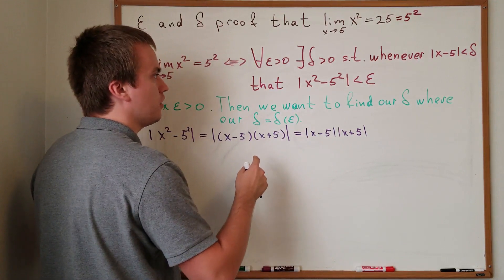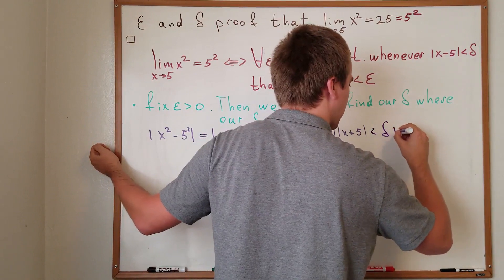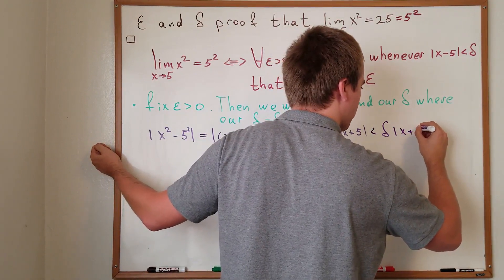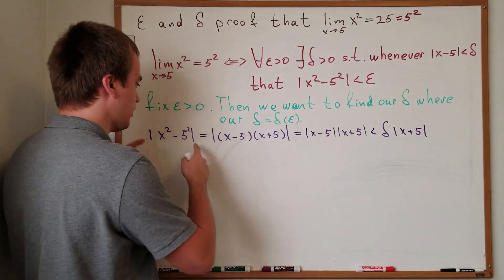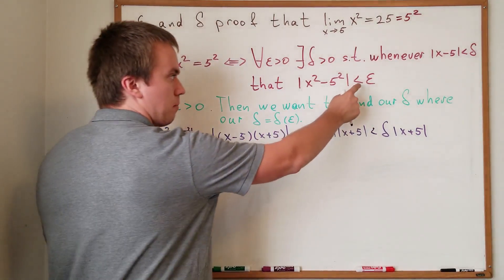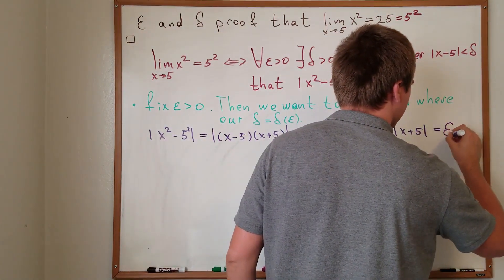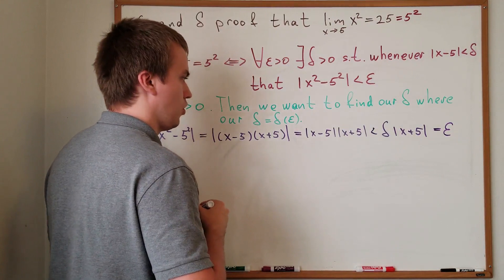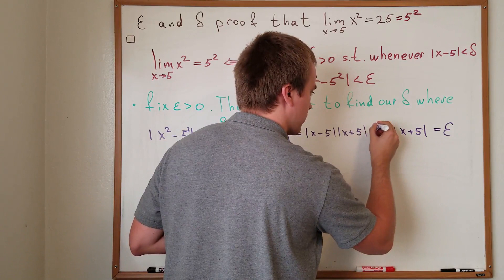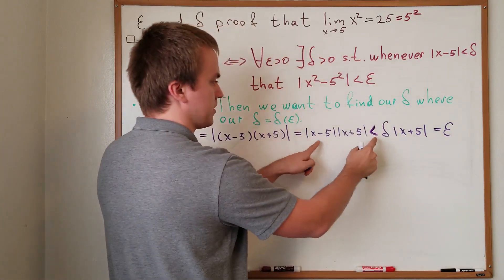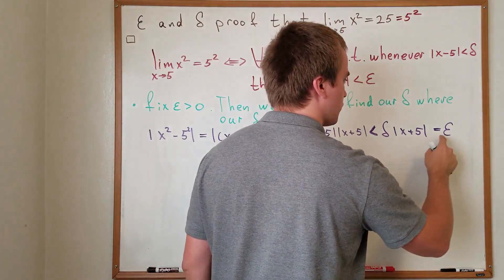From here, I know that the absolute value of x minus five must be less than delta, and I have times the absolute value of x plus five. I know that the whole thing must be less than epsilon. So I can say this is equal to epsilon. Why? Because I already have a strict inequality from the condition that the absolute value of x minus five is less than delta. From here, I can see that my delta is in terms of epsilon and x.